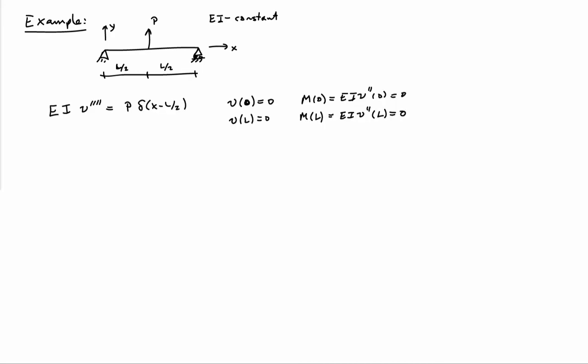We're going to need the equilibrium equation in terms of the deflection. So that's EI V with four derivatives is equal to Q. In this case, Q is a point force, so it's represented by a delta function. So it's going to be delta located at L over 2 in the beam.